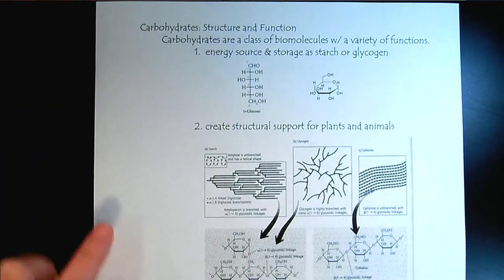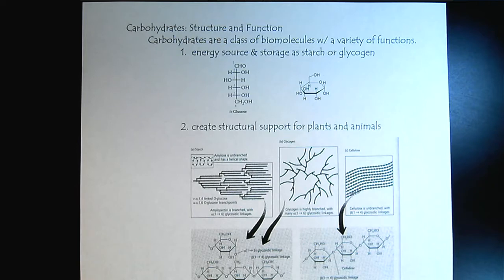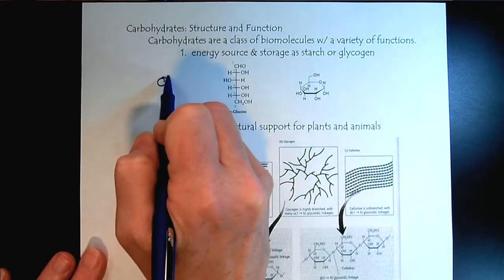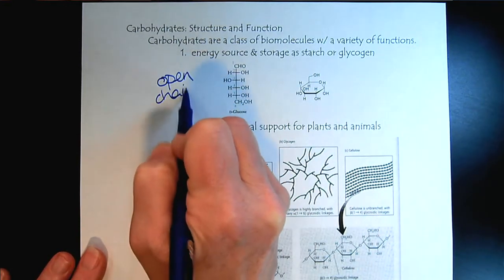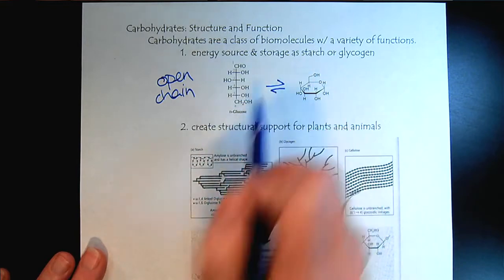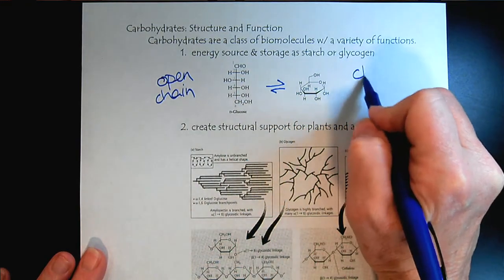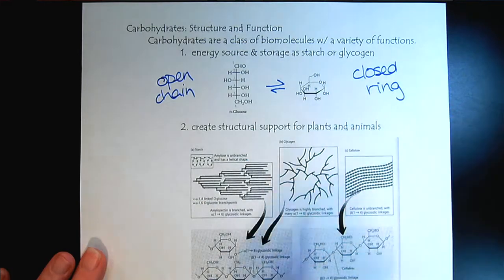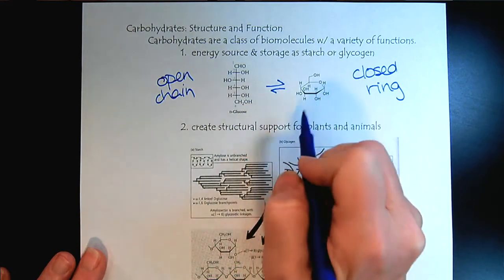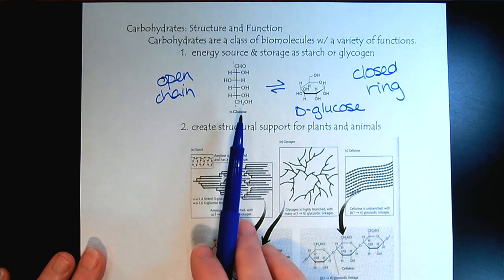When we get to the carbohydrate chapter, we'll be looking at the structure and function of carbohydrates. One of the first important things to note is here's our buddy D-glucose and it's shown as an open chain. Glucose is a big deal because it's our primary energy source. However, one of the first things we'll learn in this chapter is that it interconverts back and forth with the closed ring. You can think of glucose as our energy source and you want to start recognizing either one of these forms as D-glucose, whether you see it in the open chain or the ring.